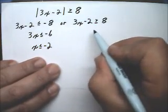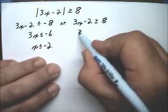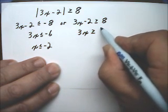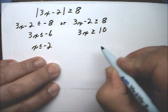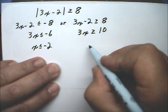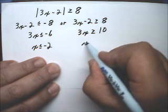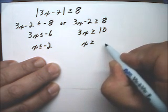Here I'll add 2 to both sides to get 3x is greater than or equal to 10. And now when I divide both sides by 3, I end up with x is greater than or equal to 10 thirds.